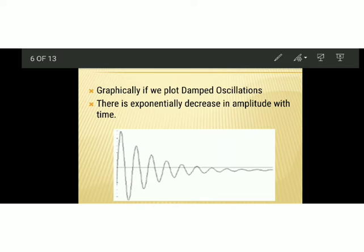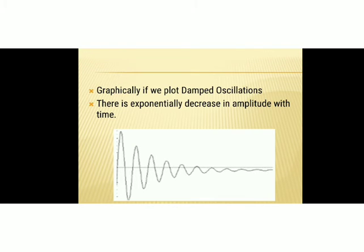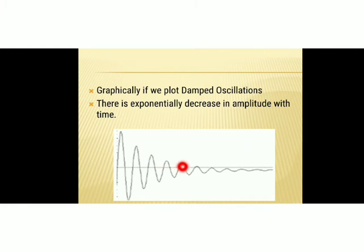Graphically, if we plot damped oscillation, there is an exponential decrease in amplitude with respect to time. Initially the amplitude is at its maximum; after some time it decreases, then decreases again, and every time the amplitude keeps decreasing with respect to time. This is the graphical representation of a damped harmonic oscillator.